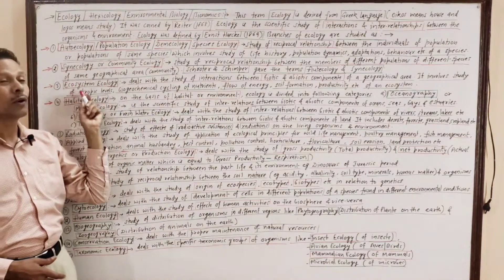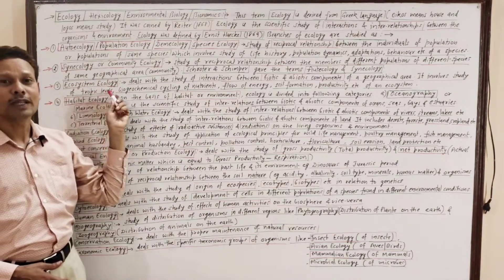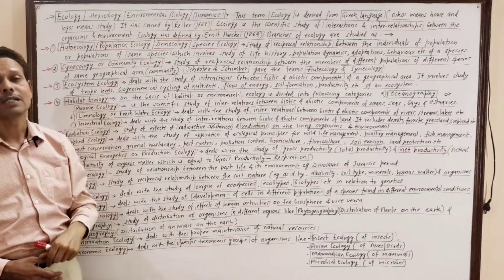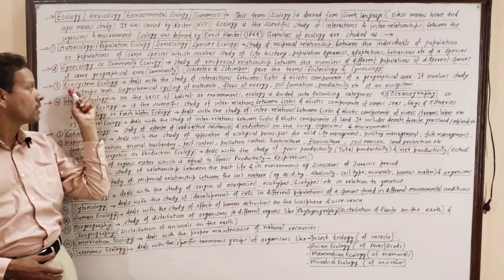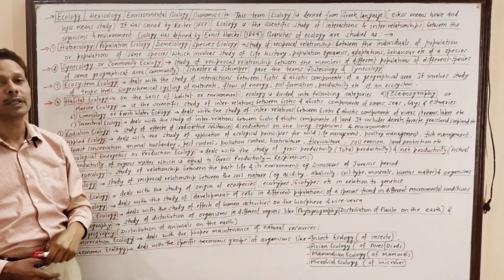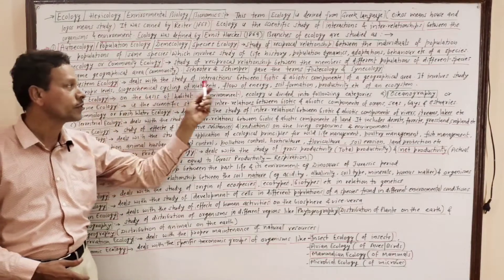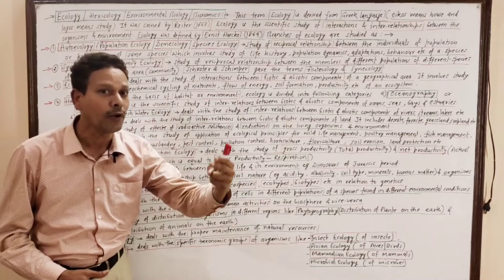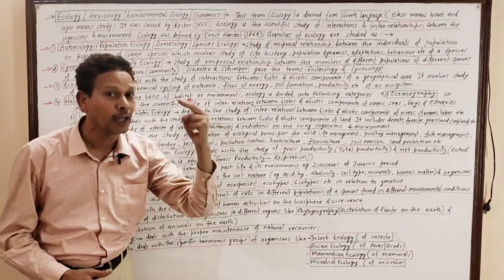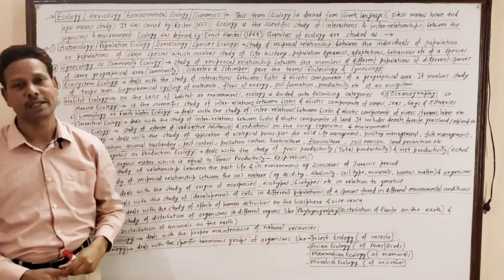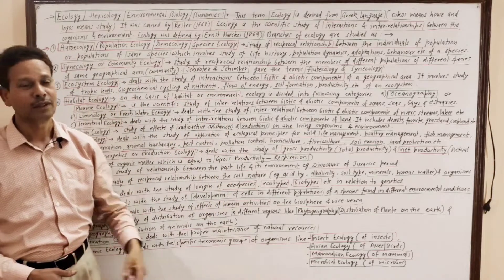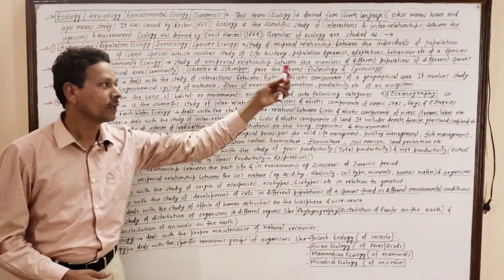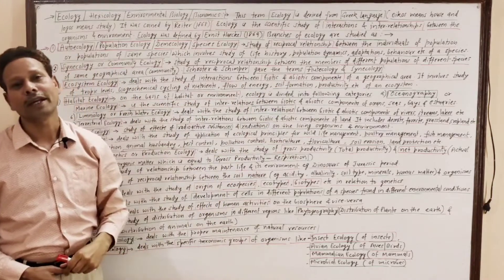The next branch is ecosystem ecology, which deals with the study of interactions between biotic and abiotic components of a geographical area.